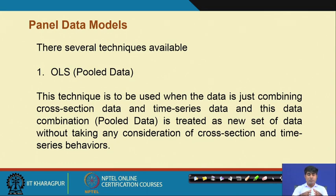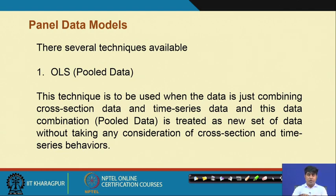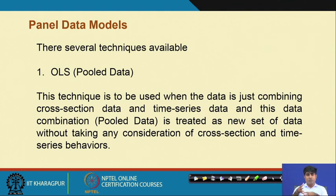With respect to pooling time series data and cross-sectional data, we have four different models altogether. The first one is the pool data model. The second one is the panel data model, where we cover three things that are very important, very common, easy to understand, and address problems more appropriately and accurately: the fixed effect model, the random effect model, and the generalized method of moments (GMM).